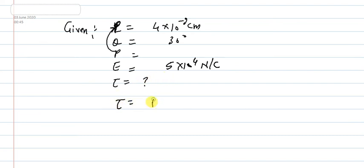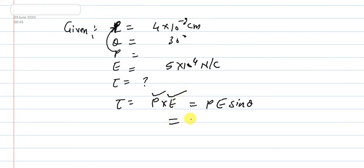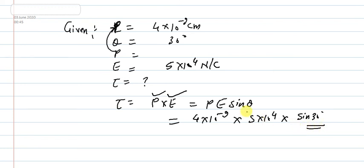The formula for torque is τ = P × E = PE sinθ, where θ is the angle between the dipole moment and the electric field. So τ = 4 × 10⁻⁹ × 5 × 10⁴ × sin30°. Since sin30° = 0.5, we get τ = 4 × 10⁻⁹ × 5 × 10⁴ × 0.5 ≈ 10⁻⁴ Newton meter. This is the magnitude of the torque.